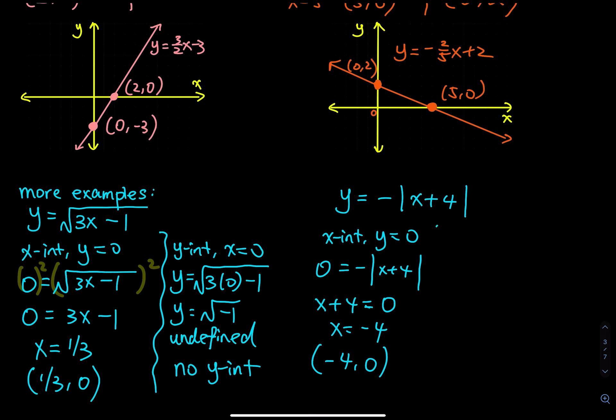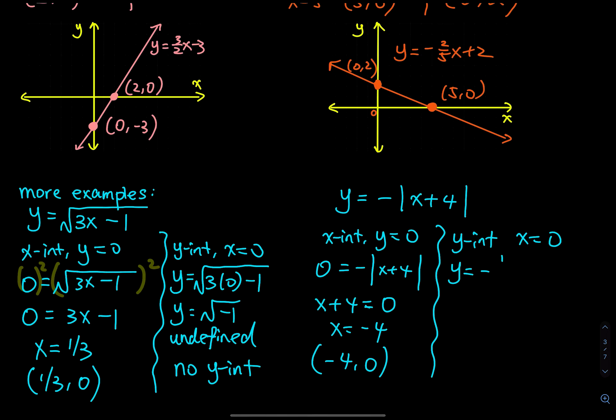For the y-intercept of y = -|x + 4|, let x equal to 0: y = negative |0 + 4| = negative 4. The negative sign is outside the absolute value so it doesn't change the result. The y-intercept is (0, negative 4).